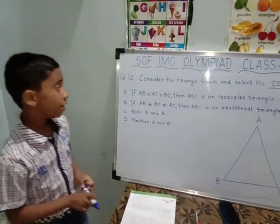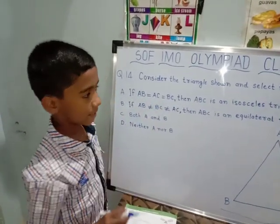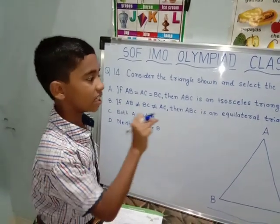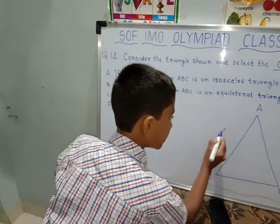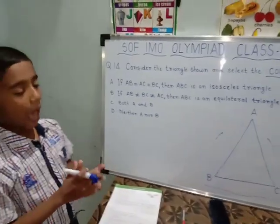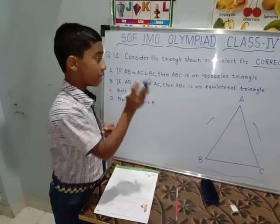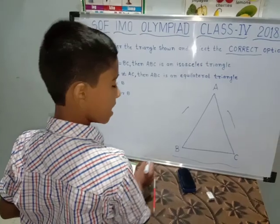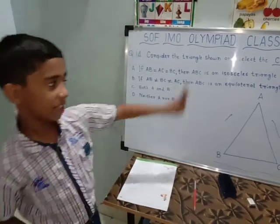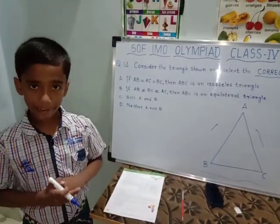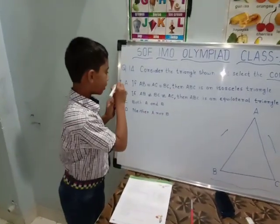We will see the first option. If AB equals AC equals BC, then ABC is an isosceles triangle. An isosceles triangle means two sides are equal and one is not. But if AB equals AC and also BC, it becomes an equilateral triangle. They wrote isosceles, so option A is not correct.